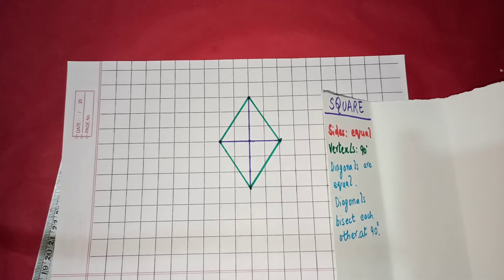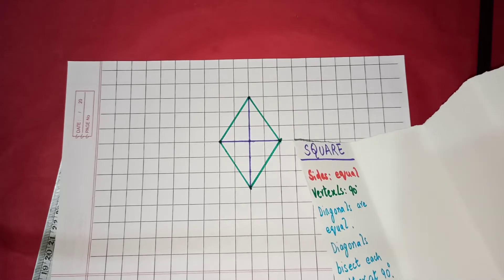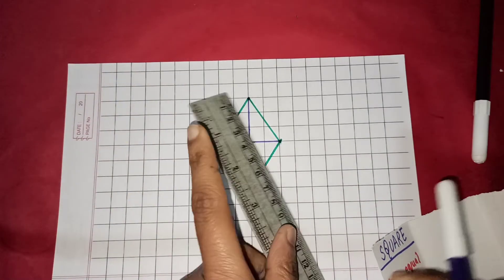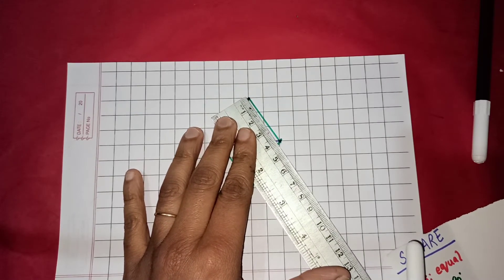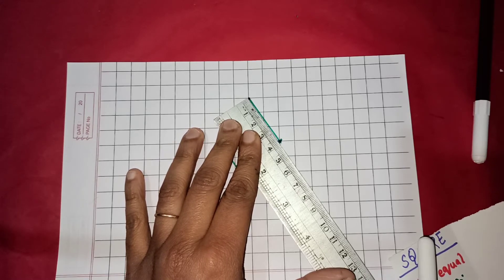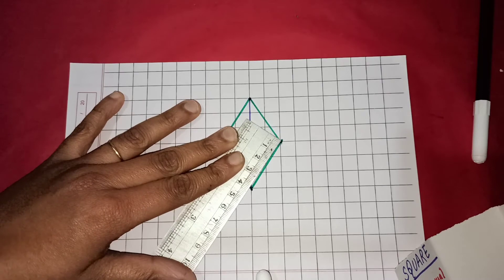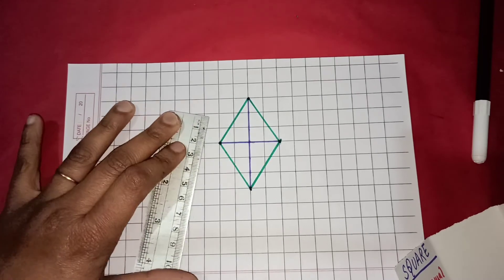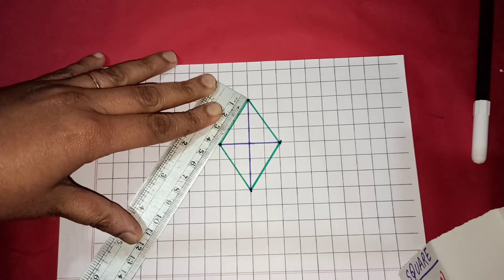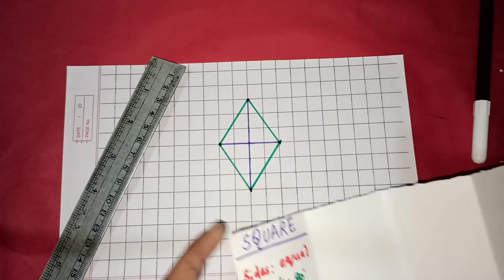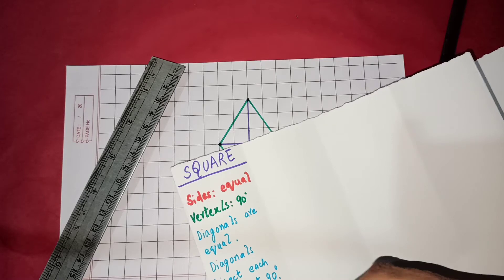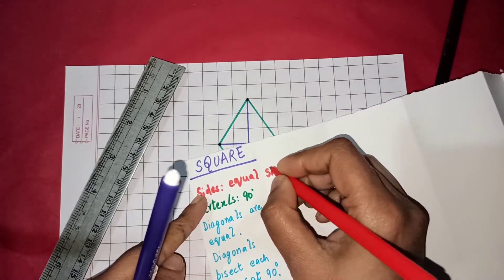Let us look at its sides now. The length of its sides. Let us measure. So, it is around 4 cm. Again around 4 cm. Around 4 cm. And this is also around 4 cm. So the sides, the length of the sides, the sides are equal.